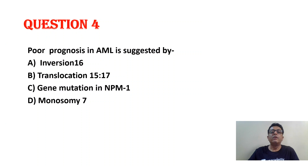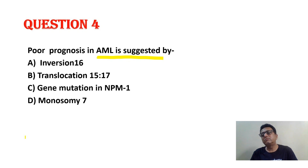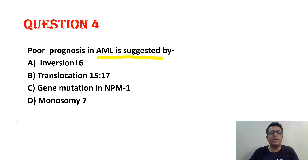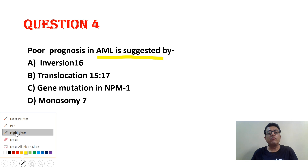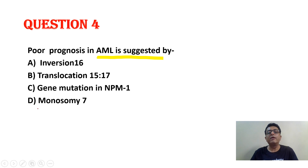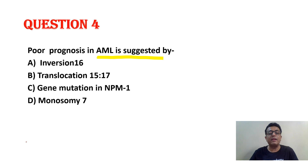Poor prognostic factor of AML is suggested by — now only memory will help us. How can we remember this question? By repeated learning, repeated hearing, repeated MCQs, we try to make a concept. All are the poor and good prognostic factors of AML and ALL. This question is asked so many times.